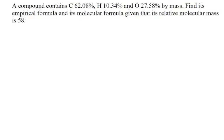Hi guys, today we're going to go through some empirical and molecular mass problems. A compound contains carbon 62.08%, hydrogen 10.34%, and oxygen 27.58% by mass. Find the empirical formula and its molecular formula, given that its relative molecular mass is 58.